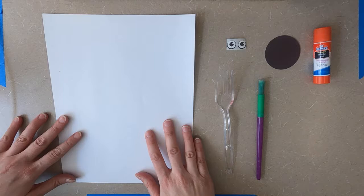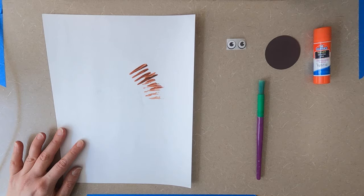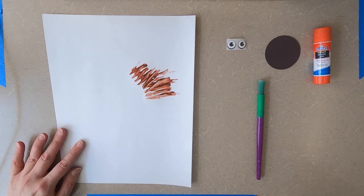For this, we want to make sure that we put the paint towards the bottom of the fork and try to make a circle. And we want our bear to be big, so we want it to take over lots of the paper.